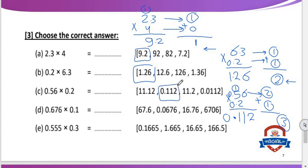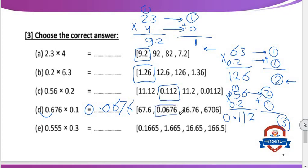Letter D: 0.676 multiply 0.1. When we multiply by 0.1, the decimal point moves one place to the left. So the decimal point moves here — one place. The result will be 0.0676.